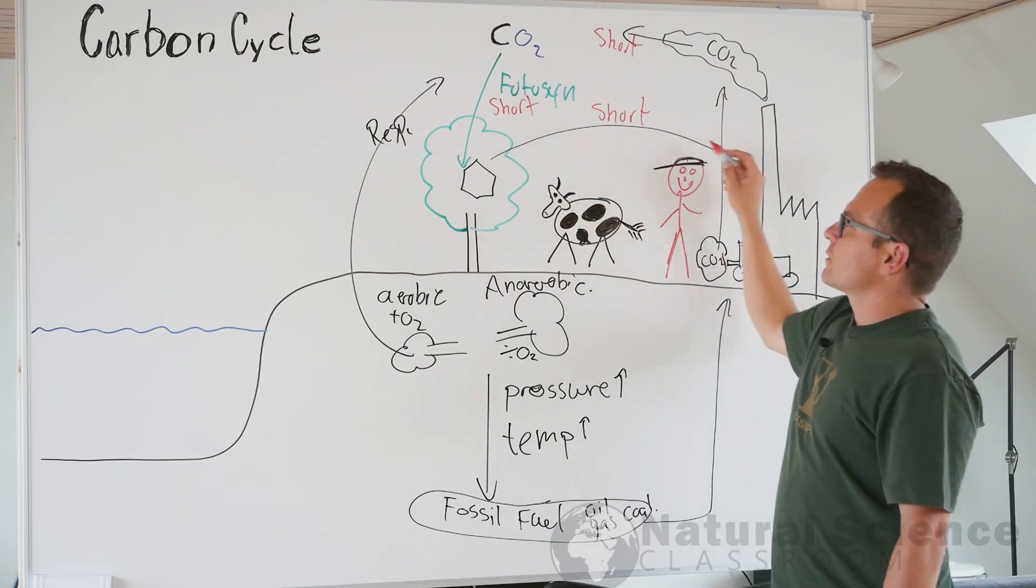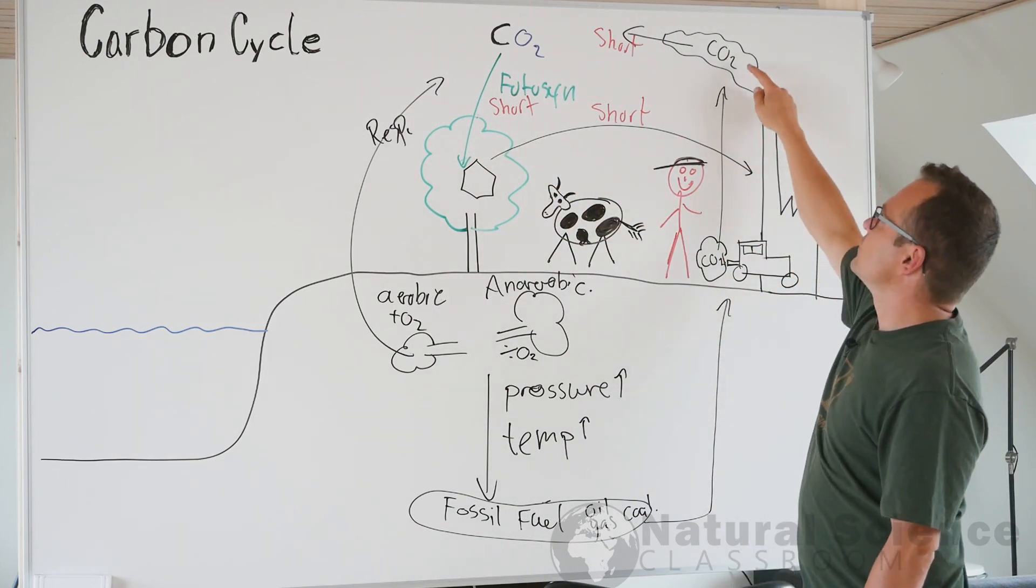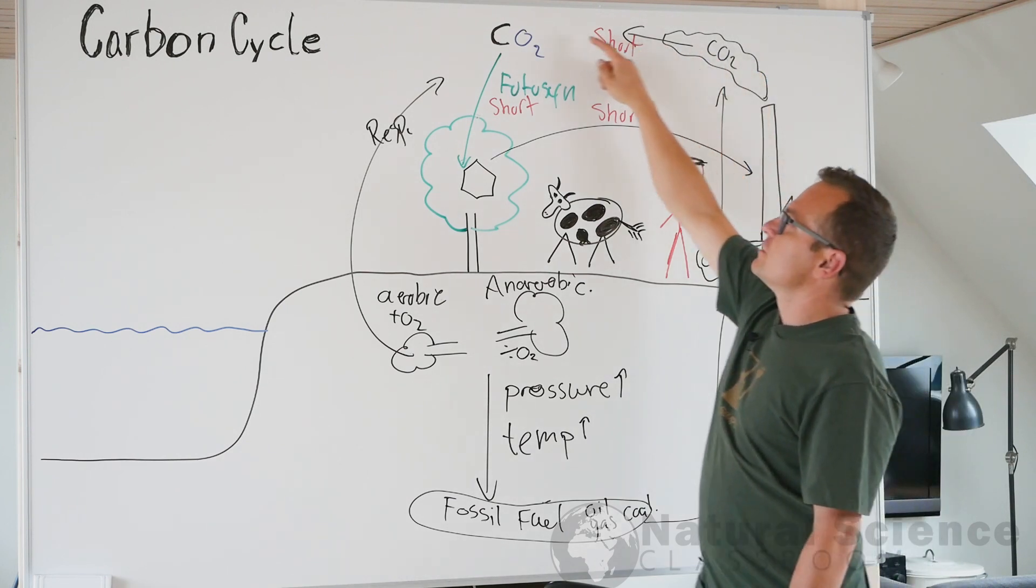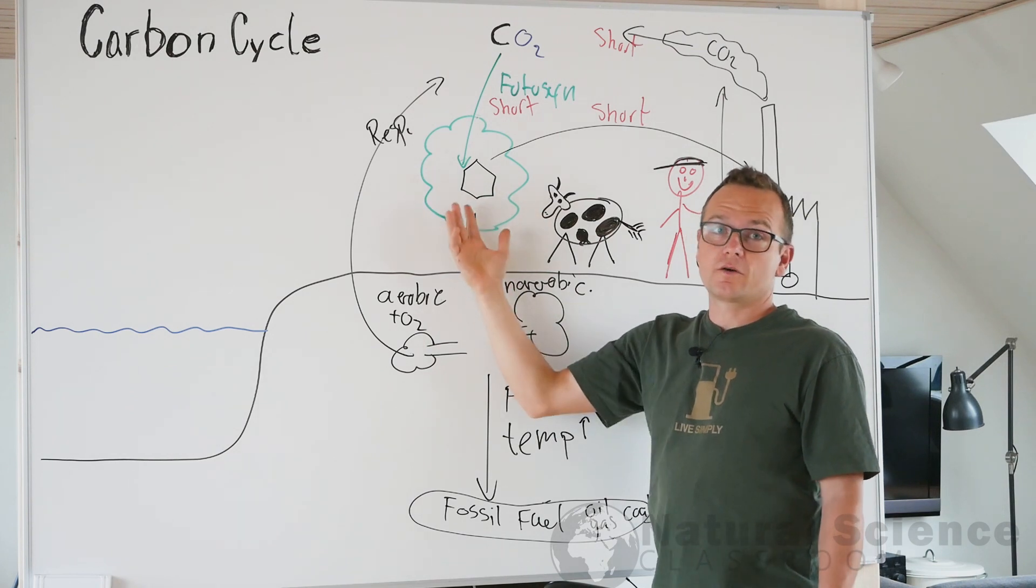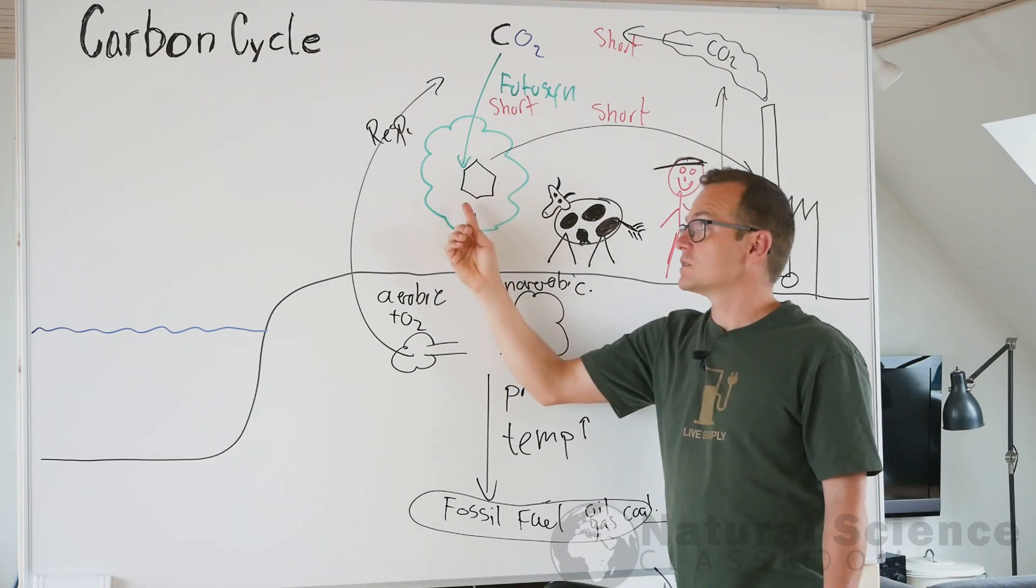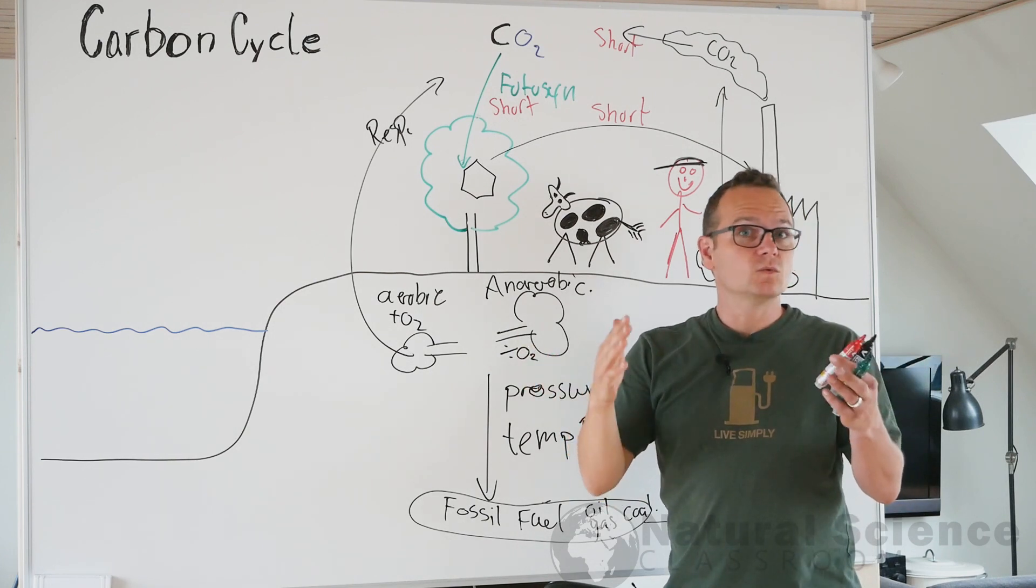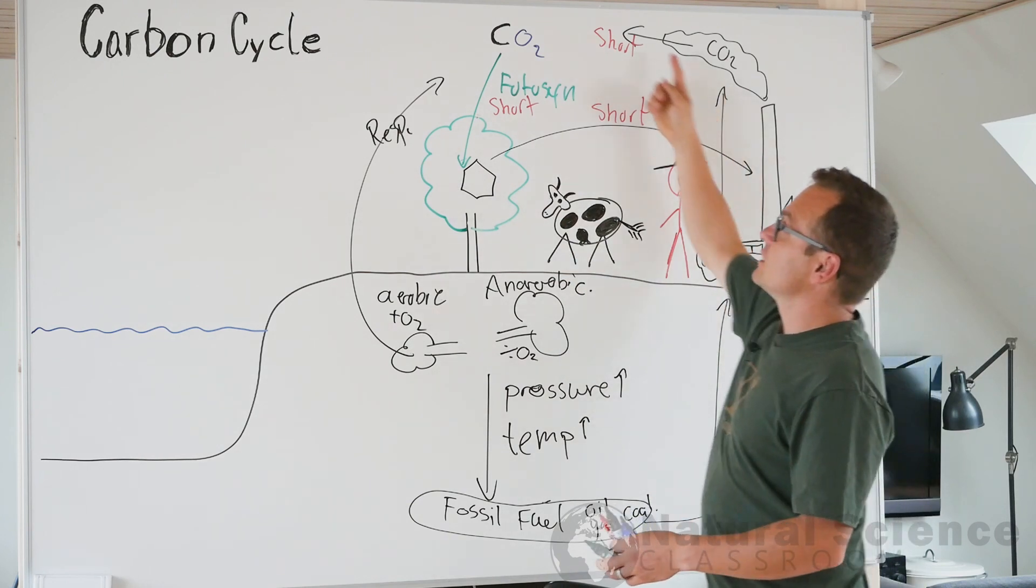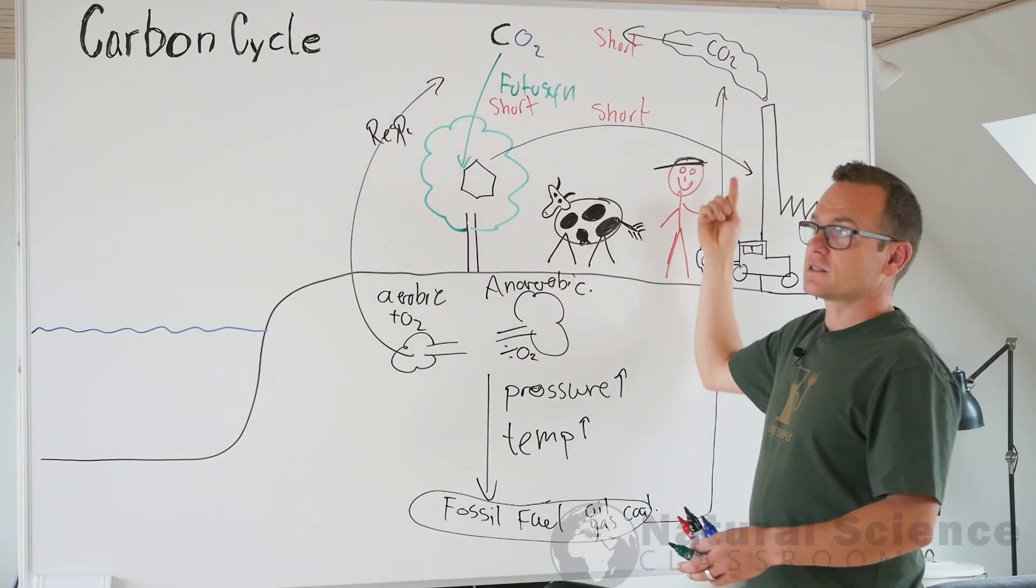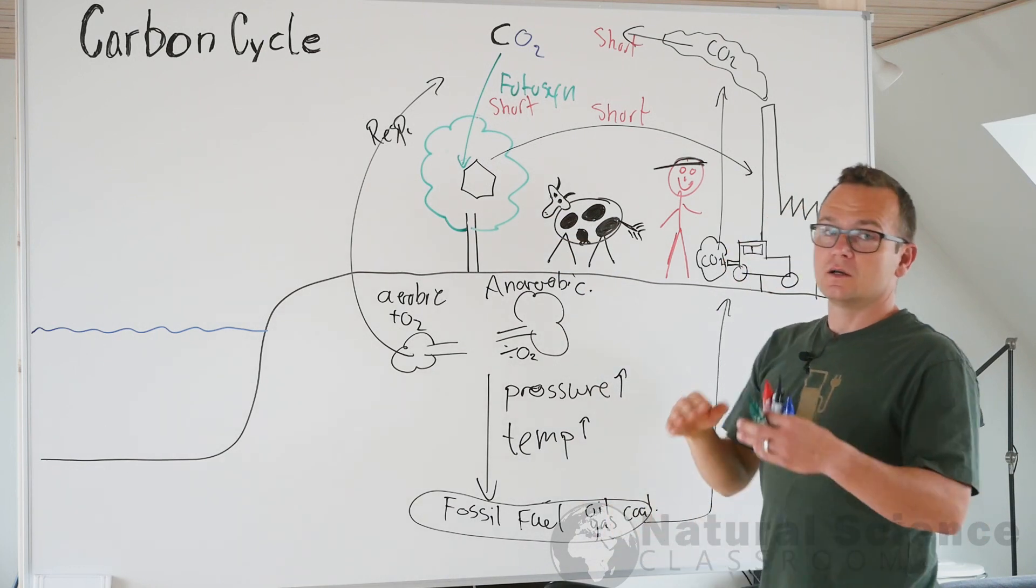So why is it important to discuss how long time it takes? Because if you emit CO2 into the atmosphere and the CO2 right away is reabsorbed into organic matter through photosynthesis, then the concentration in the atmosphere of CO2 won't rise, it will stay the same. So this is a really fast cycle and therefore the CO2 in the atmosphere won't rise.